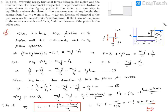Question number 8. In a real hydraulic press, frictional forces between the piston and the inner surface of tubes cannot be neglected. In a particular real hydraulic press shown in the figure, the piston in the wider arm can stay in equilibrium above the piston in the narrower arm at any height ranging from H minimum to H maximum, which is 1 cm to 2 cm. Density of the material of the pistons is eta, which is 3 times that of the liquid used. If thickness of the piston in the narrower arm is T, which is 5 cm, find the thickness of the piston in the wider arm.